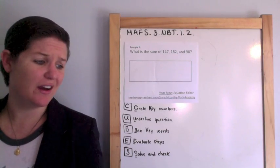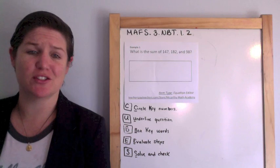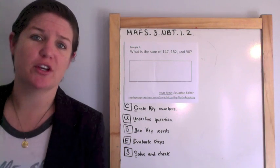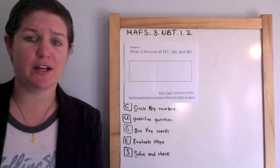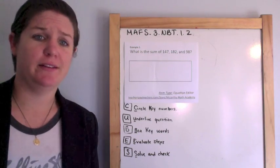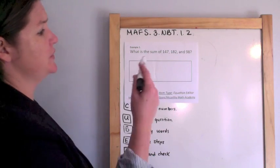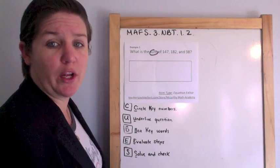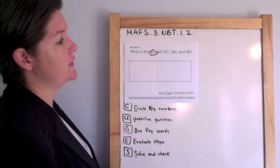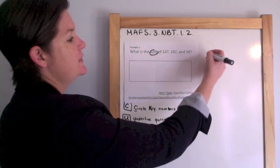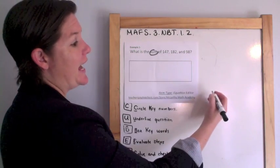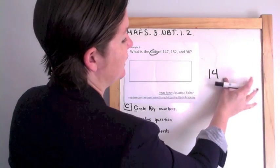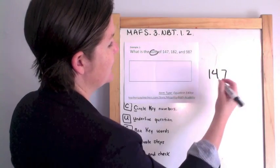Example 1. This is pretty basic, just adding and subtracting. This should be a familiar skill from second grade, first grade, but let's get to it. What is the sum of 147, 182, and 98? Sum means that you are adding, so I'm going to add these and make extra sure that I line these up nicely.